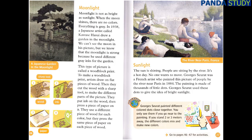Moonlight is not as bright as sunlight. When the moon shines, there are no colours — everything is grey. In 1938, a Japanese artist called Kawase Hasui drew a garden in the moonlight. We can't see the moon in his picture, but we know that the moonlight is strong because he used different grey inks for the garden. This type of picture is called a woodblock print. To make a woodblock print, artists draw on flat pieces of wood, then cut the wood with a sharp tool to make the different parts of the picture. They put ink on the wood, then press a piece of paper on it. They use a different piece of wood for each colour, but press the same piece of paper on each piece of wood.